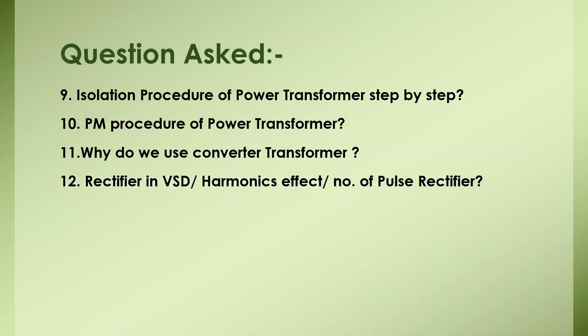What is a rectifier in a VFD and what are harmonic effects? For higher megawatt drives — such as 15 MW motor drives — there are significant harmonic effects. To nullify these, we use 36-pulse converter transformers. The harmonics generated follow the formula N×P ± 1, so for a 36-pulse transformer you get the 35th and 37th harmonics, which have much less impact on the system than lower-order harmonics like the 3rd and 5th.